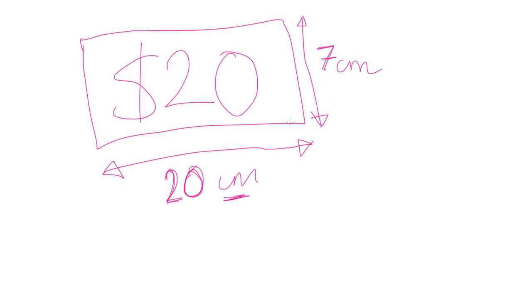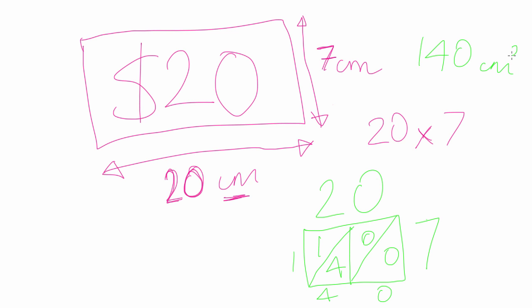For every 20 centimeters this way there's 7 centimeters this way. So that's what we're going to do: 20 by 7. Let's work it out with our trusty lattice. 7 times 2 is 14, so 140 centimeters squared. Because for every centimeter this way, there's another centimeter this way, so we're covering the whole area of the shape.